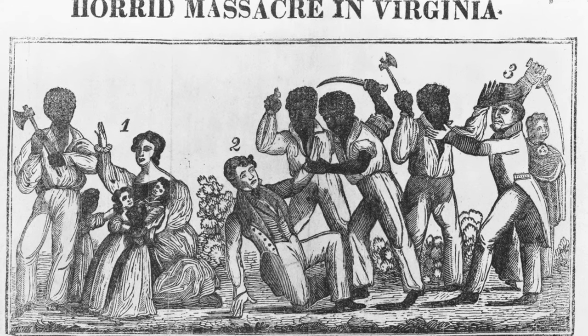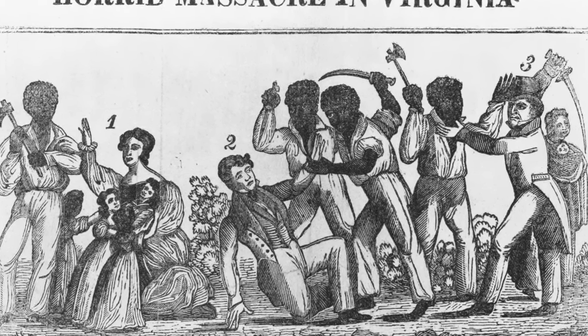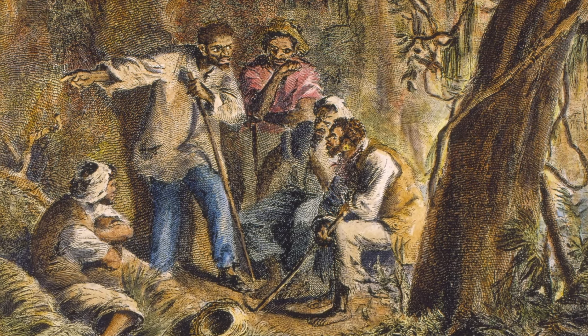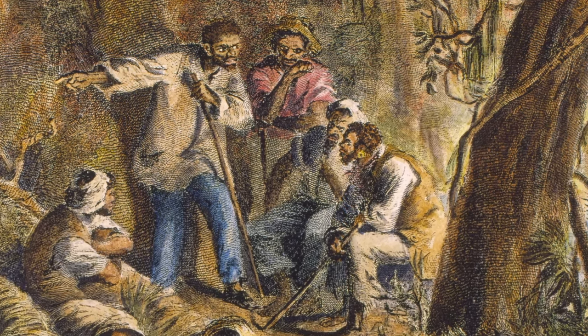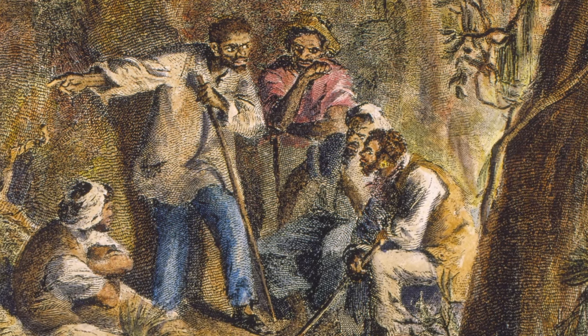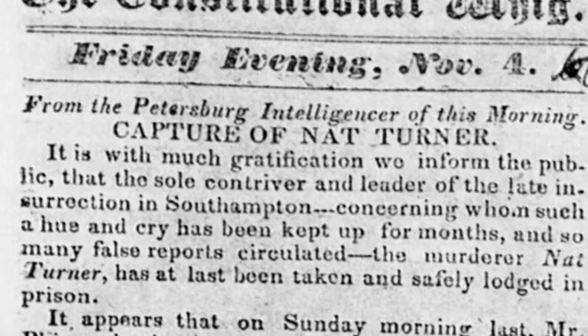Nat did not originally want this to be an all-out slaughter, but decided it was the best way to inflict complete terror and alarm in order to completely awaken the attitudes of people across the South. The local militia, along with artillery units, were dispatched in order to suppress the rebellion, and they succeeded. After a short time in hiding, Nat was captured and executed on November 11, 1831.